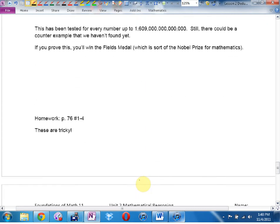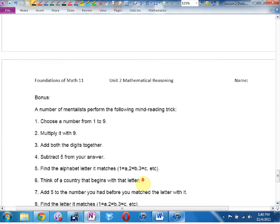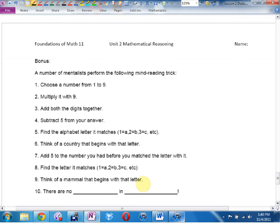What's your homework? Hold on. Turn the page. I've seen many a magician perform this mind-reading trick here. So it says this. A number of mentalists perform the following mind-reading trick. Get your calculators out. See if you can do this with me. Choose a number from 1 to 9. Marcus, that means 11 is no good.